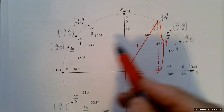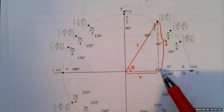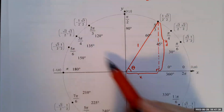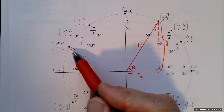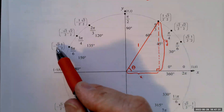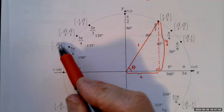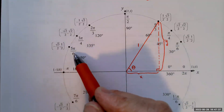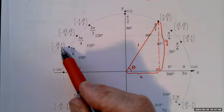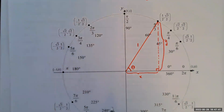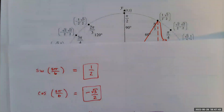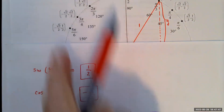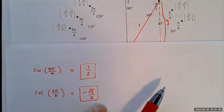For example, what is the sine, cosine, and tangent of 5π/6? On the unit circle, 5π/6 is an obtuse angle — more than 90 degrees. The x-coordinate is negative √3/2 and the y-coordinate is 1/2, so sine of 5π/6 equals 1/2 and cosine equals negative √3/2.